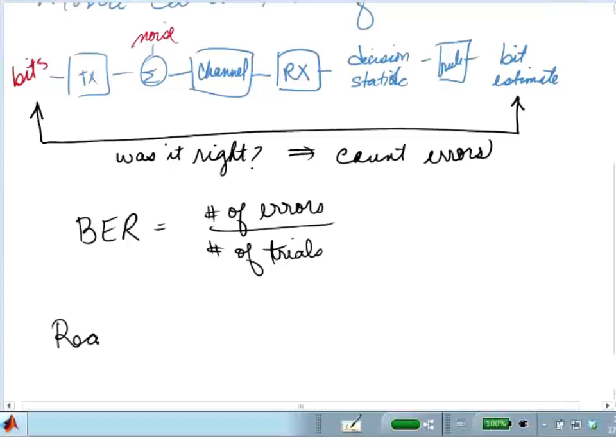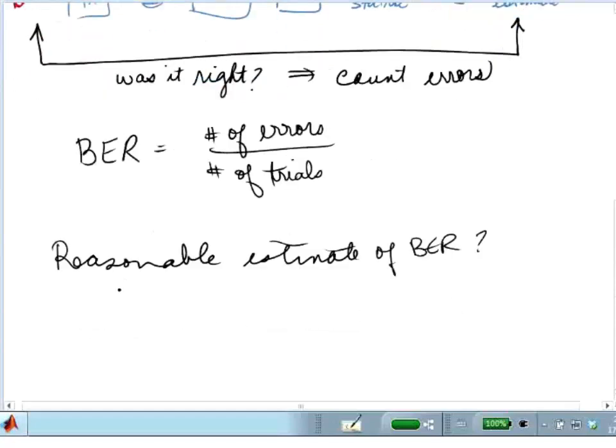So a reasonable estimate of BER, what's the criteria? And what we often talk about is a stopping criteria.